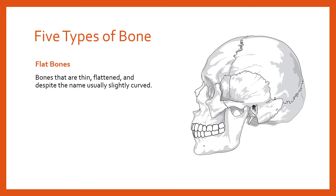Flat bones tend to be thin and flattened — hence the name — but in spite of the name are actually usually ever so slightly curved, depending on their place in the skeleton. The function of a flat bone is protection: when there's an impact, because it's broad and flat, that impact is spread out and the pressure is dissipated over the bone to absorb shock. Best examples are the cranium — the 22 bones that make up the skull — and the sternum, the breastbone, both of which protect vital structures beneath them.